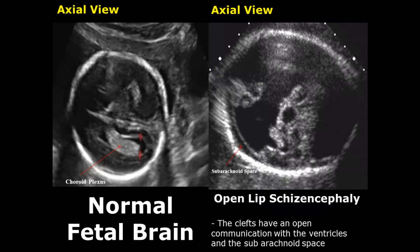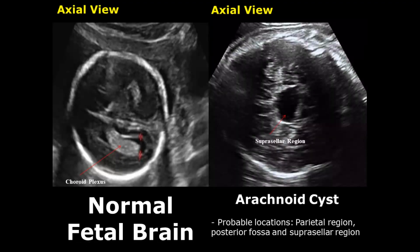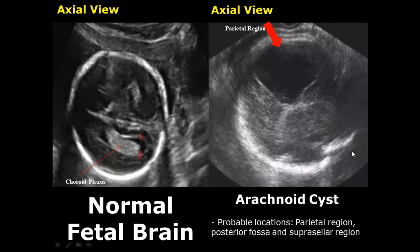In the open-lip type, the walls of the clefts have separation and there is direct connection from the lateral ventricle to the brain surface. An arachnoid cyst is present between the meninges of the brain — that is, in the subarachnoid space — and does not connect with the lateral ventricles. The most common location is the parietal region, but it can also be present in the posterior fossa or suprasellar region. This is an arachnoid cyst in the parietal region.